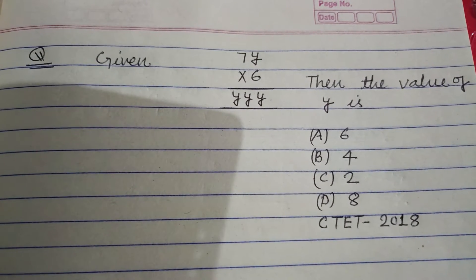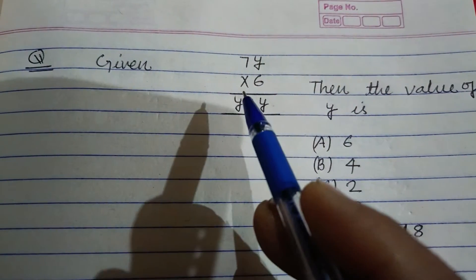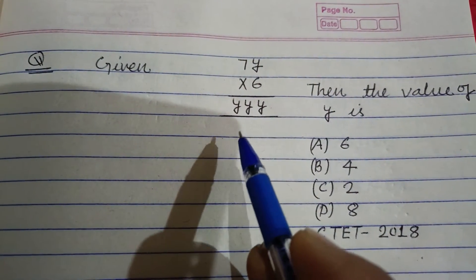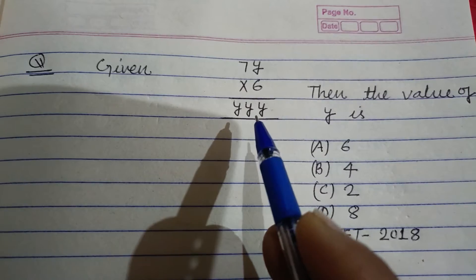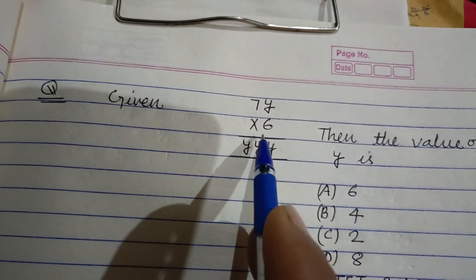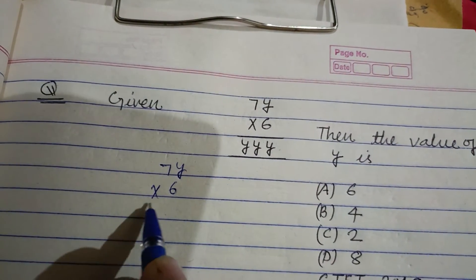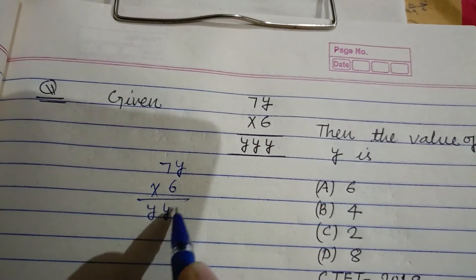Hello students, warm welcome to this YouTube channel. CTET question 2018: Given 7y × 6 = y4y, then the value of y is? Here 7y × 6 equals y4y, so we need to find the value of y.